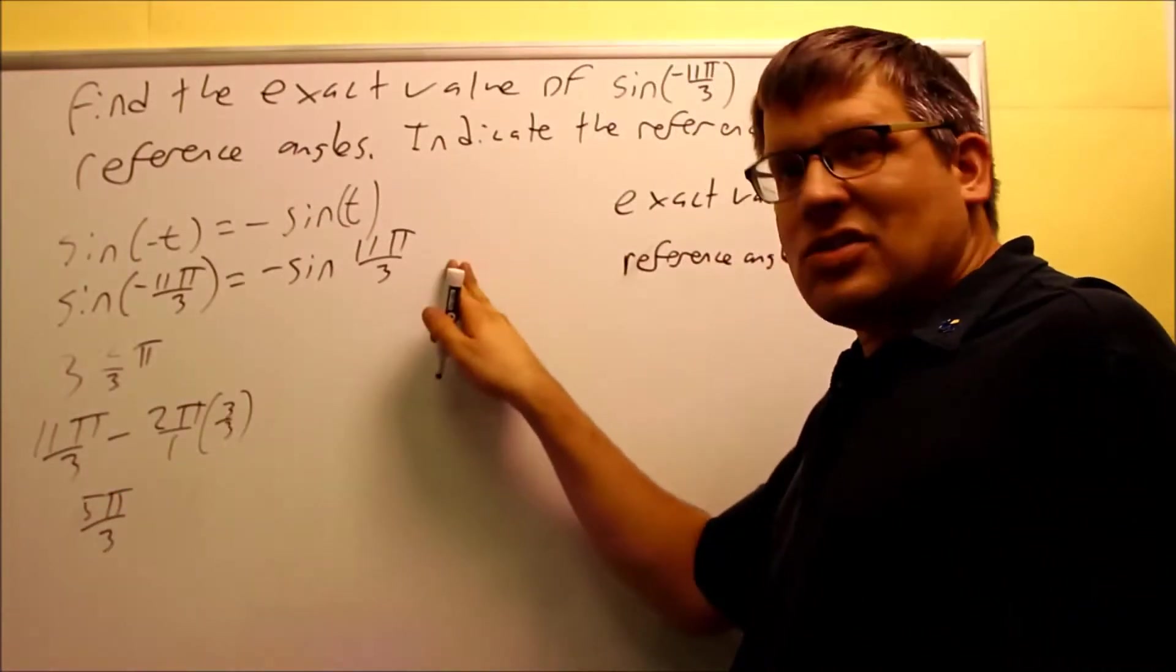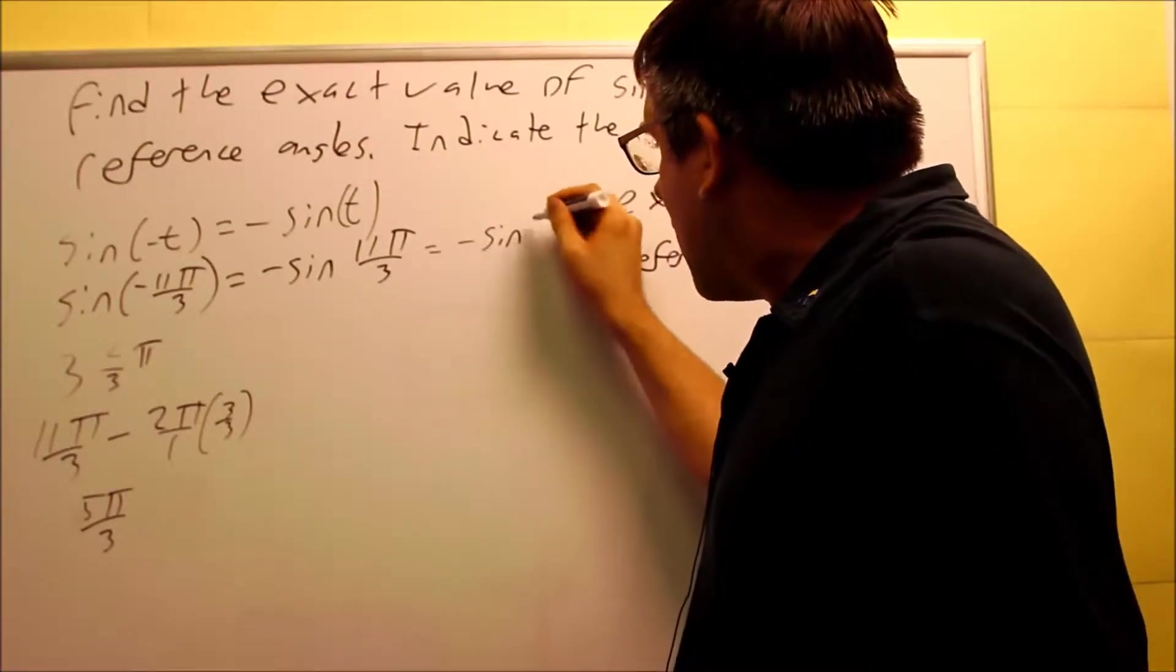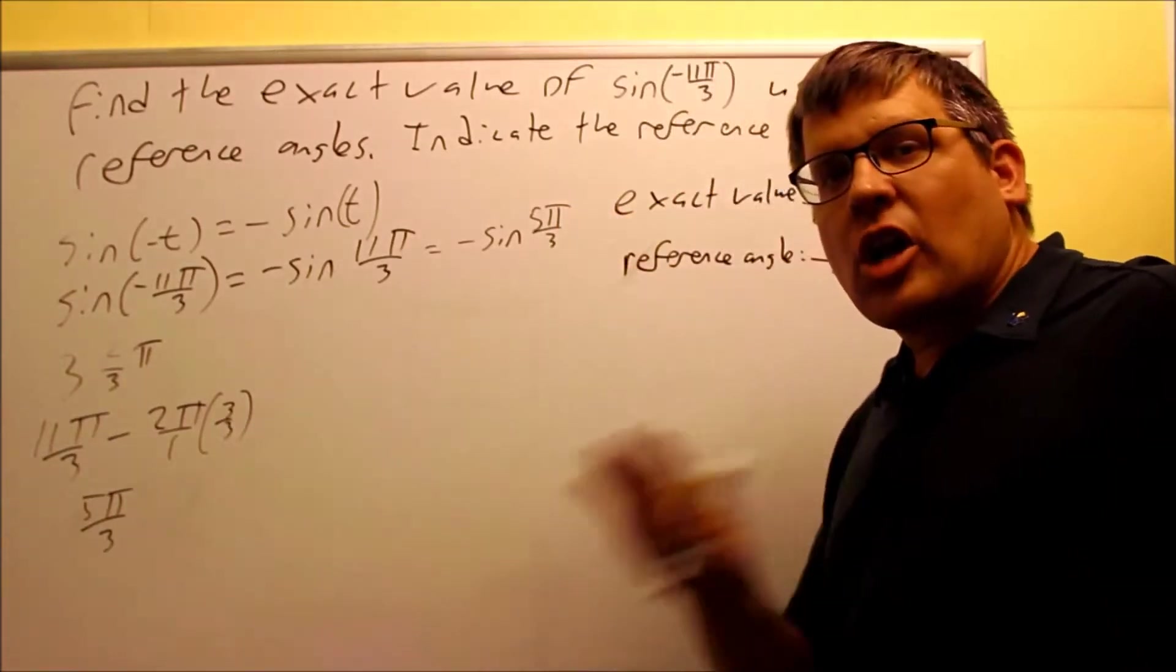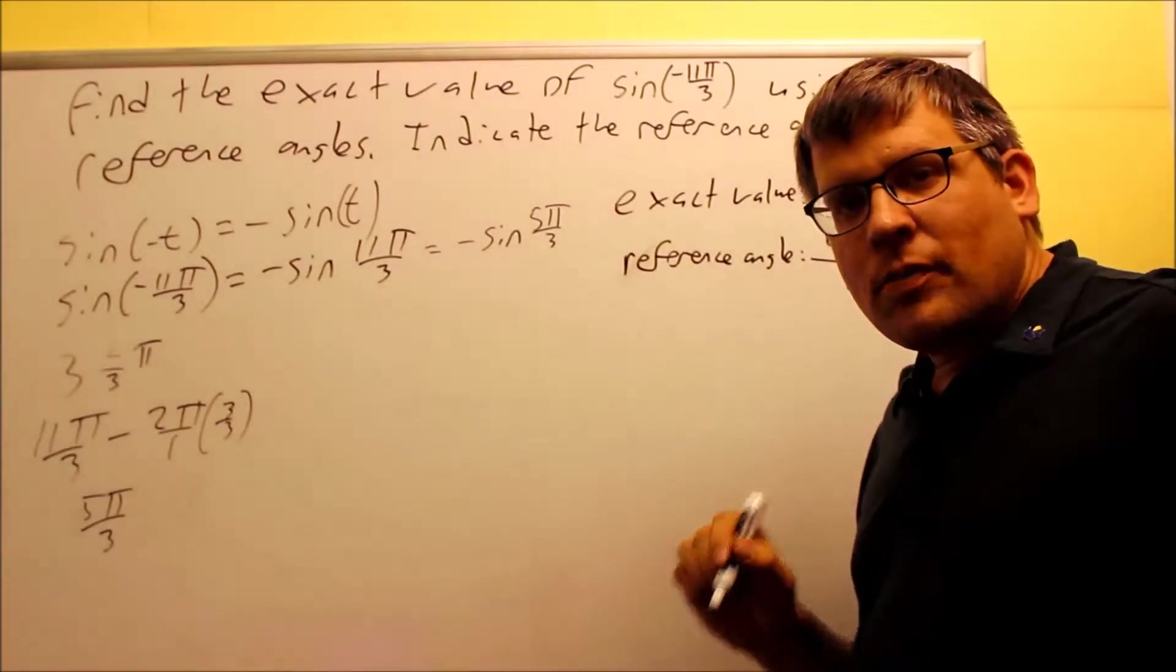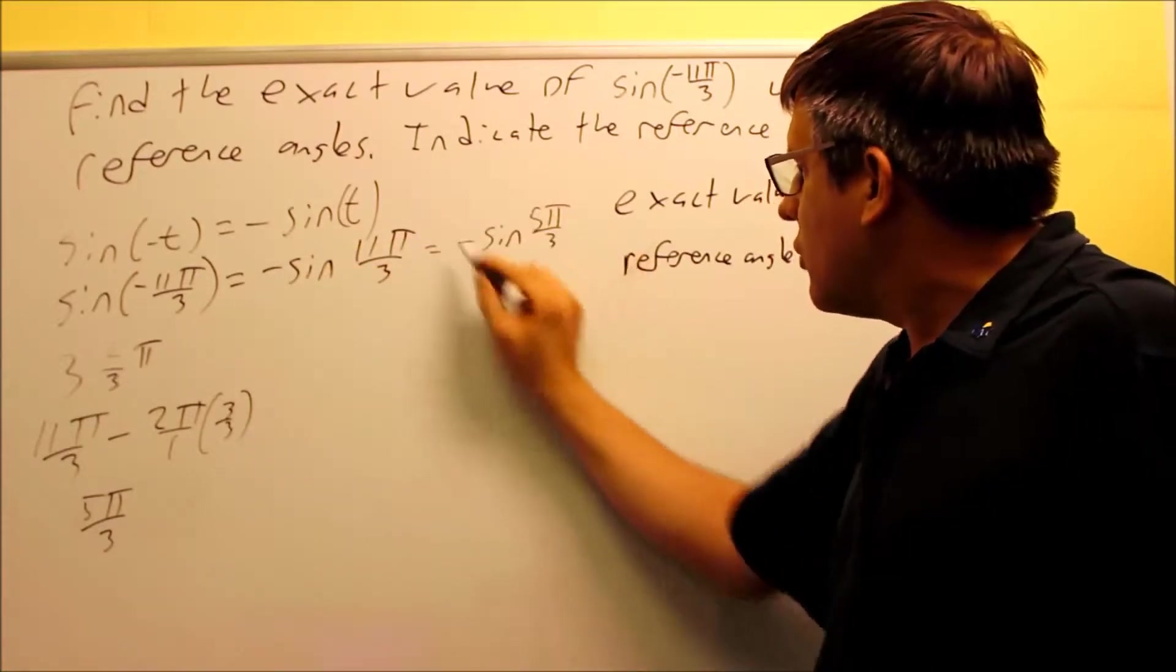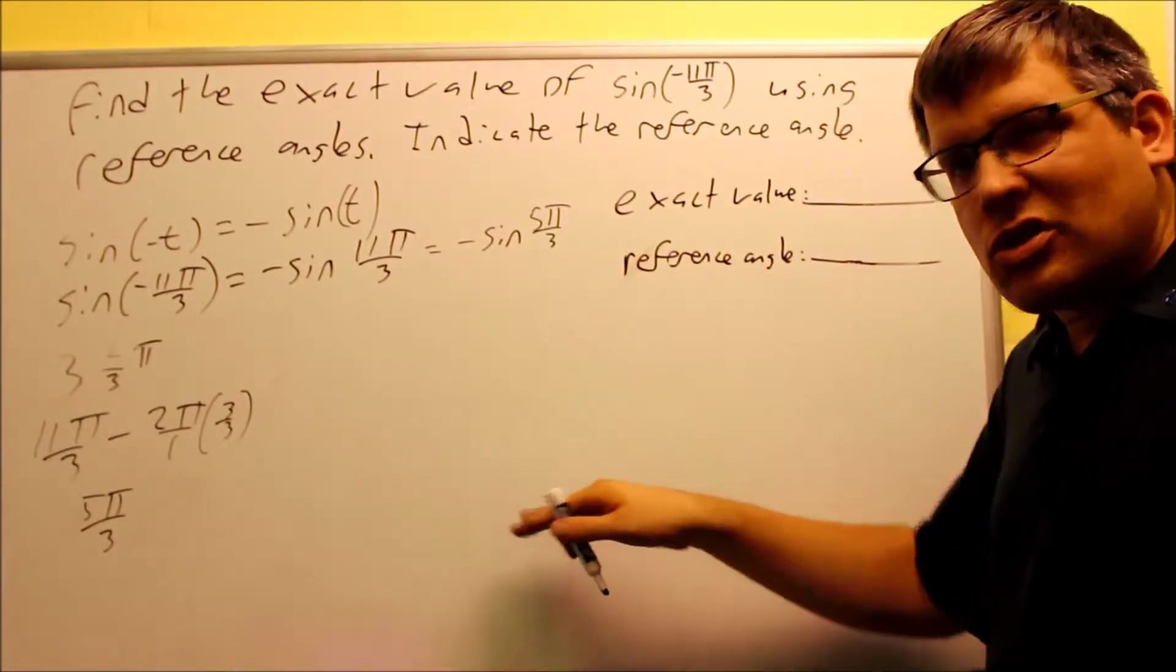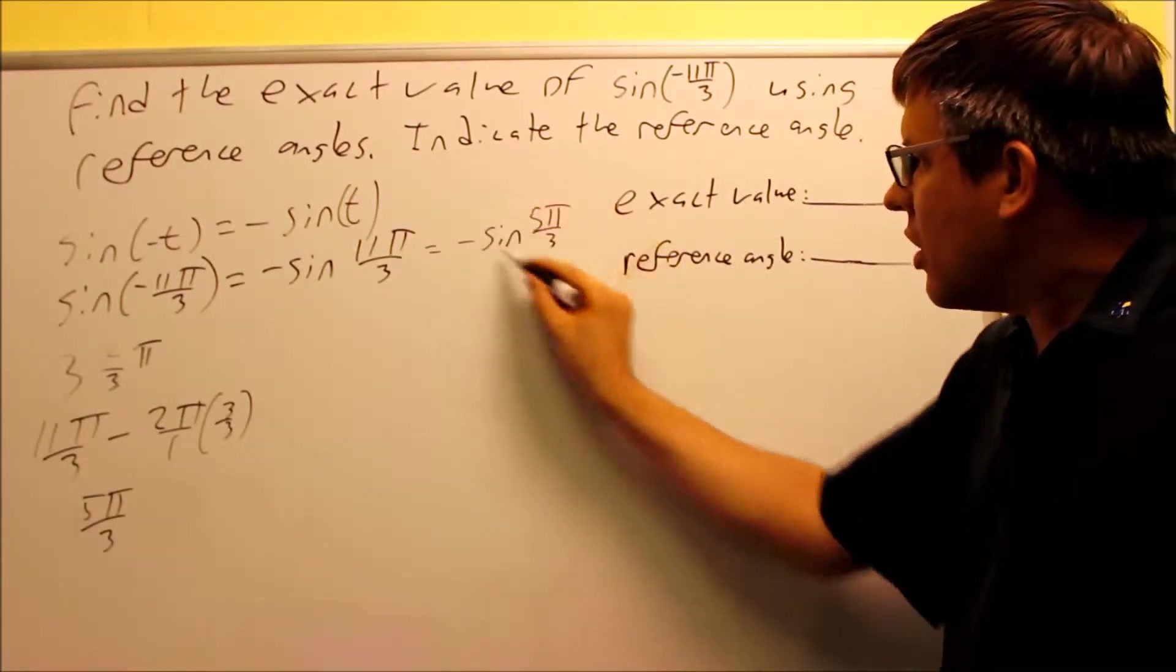Which means that I can take this right here and rewrite that as negative sine 5π over 3. The extra revolution, I'm going to automatically eliminate that, because when you go around an extra revolution, we don't need to worry about that. It takes us back to the same place we started from. Therefore, I'm going to change the whole entire problem into this one right here. All the work going through these three steps by finding the exact value and reference angle, I'm only going to use this.